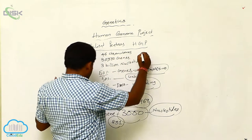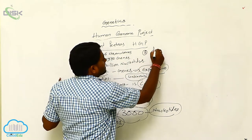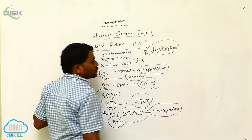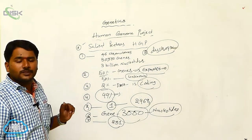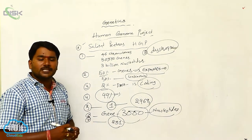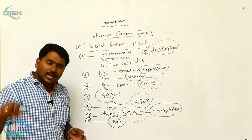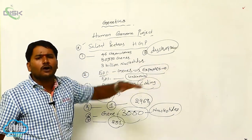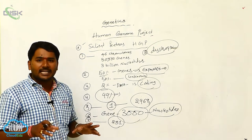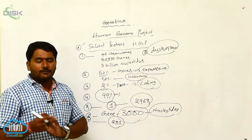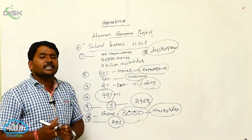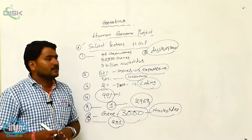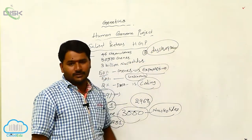The biggest gene is the dystrophin gene. Dystrophin is a gene which produces dystrophin protein, responsible for muscle formation as well as the formation of the sarcolemma. Dystrophin is considered the biggest gene because it has the greatest number of nucleotides.